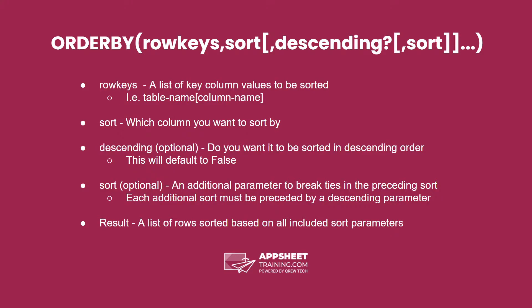The Order By expression has multiple parameters, and a lot of these are optional. The first is a list of key column values that you want to be sorted. The most common way of doing this is the table name column name format, where column name is the name of the key column in the table.